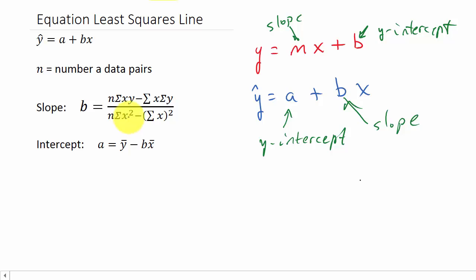Let's talk about this. These are not the same thing. The sum of x squared means you square each x value and then sum them up. The sum of x squared means you sum the x values first and then square that number. Let's take a look at an example.